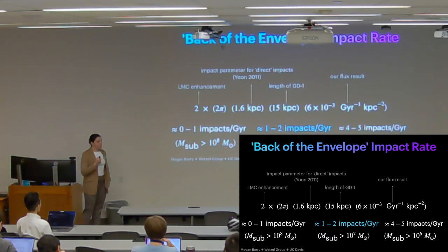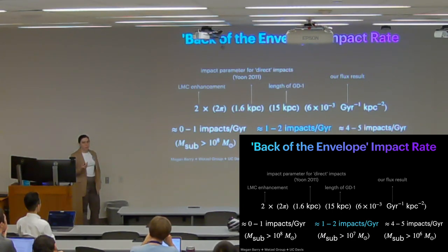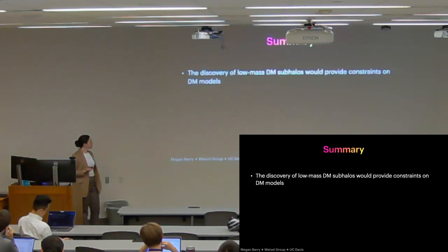And for our smaller mass range, this works out to about four to five impacts per giga year. So again, this is just sort of a little fun estimate, but it gives us an idea of how effective this technique could be and maybe what to expect as these measurements are starting to come out. There's a few papers already starting to examine GD1 and some other streams.